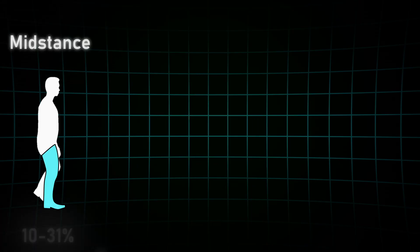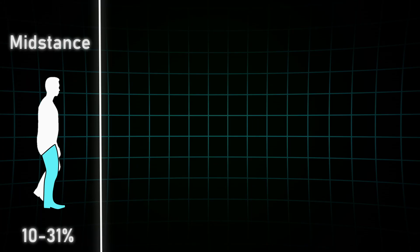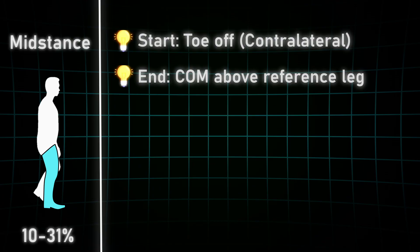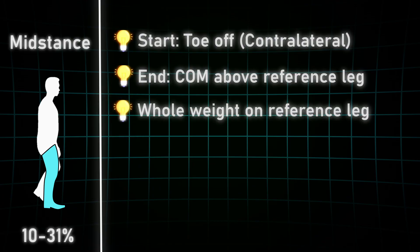Next, the mid stance phase. It begins when the contralateral leg is off the ground and ends when the center of gravity is above the middle of our reference leg. That means the whole body weight is now fully supported by one leg and moves forward in a controlled manner.